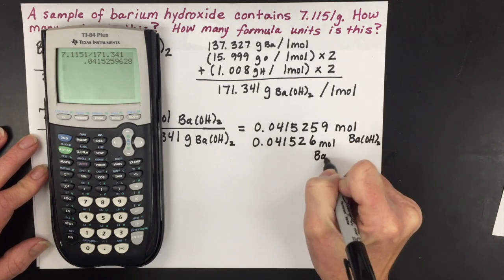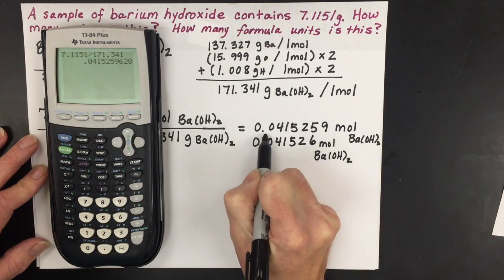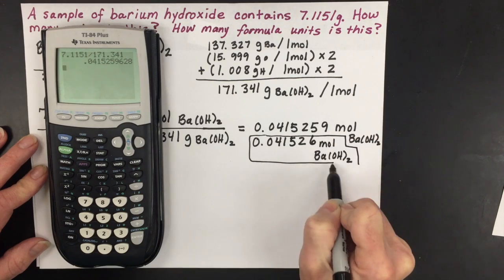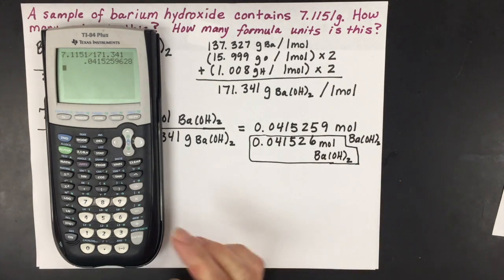You'll have a number with a unit and the label. So this would be the answer for the first part of this question, which is how many moles is that 7.1151 grams.